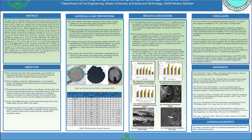The optimum dosage of carbon nanotubes was found to be 0.125 percent, which increased compressive strength up to 62 percent, 30 percent, and 21 percent at 7, 28, and 90 days respectively. Figure four presents the results for the combined additions.